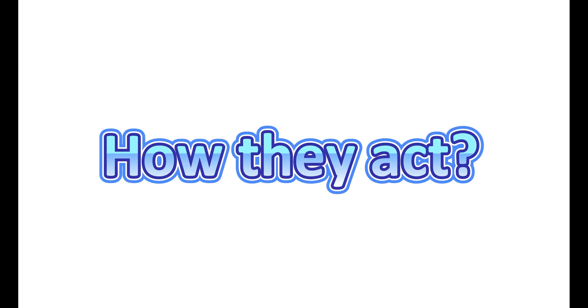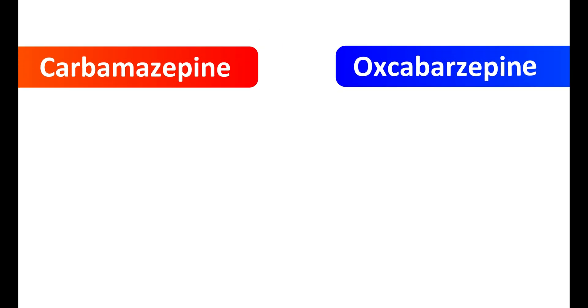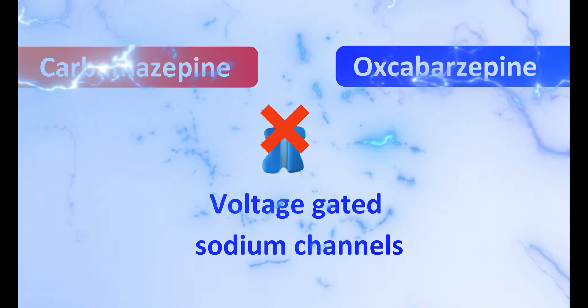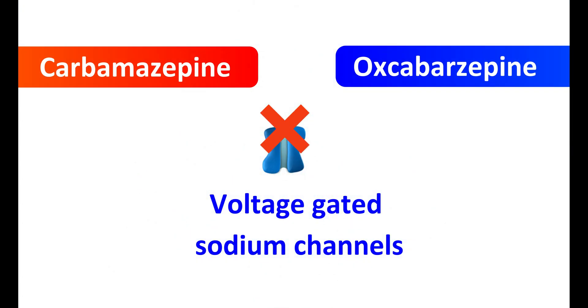First, let us see how they act. Both carbamazepine and oxcarbazepine act in a similar way to reduce neuronal activity. Both of these drugs block voltage-gated sodium channels, thereby they reduce neuronal excitation and conduction. This reduces the frequency of neuronal firing and suppresses epileptic seizures. They are also helpful in reducing pain associated with trigeminal neuralgia.